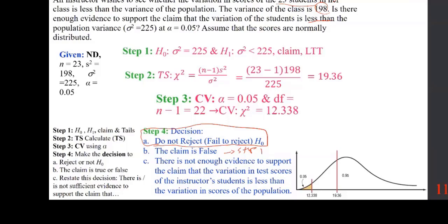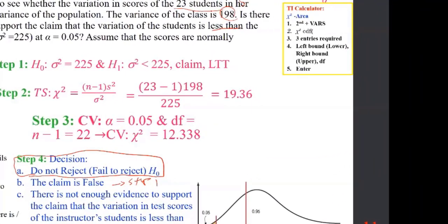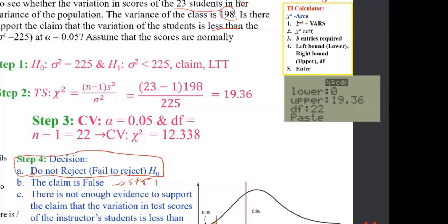Part A comes from the comparison of steps 2 and 3. Part B comes from step 1 — locate the claim and figure out which hypothesis it belongs to. Part C is always written as 'there is or there is not sufficient evidence to support the claim.' Using TI: go to 2nd VARS, chi-squared CDF, and enter the lower bound, upper bound, and degrees of freedom. This gives you the chi-squared p-value of 0.37994.